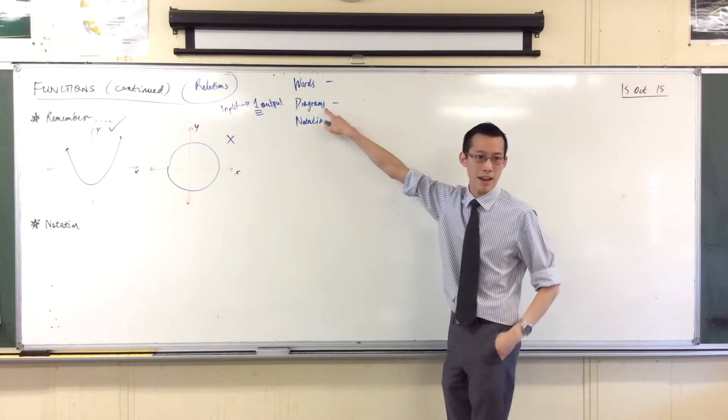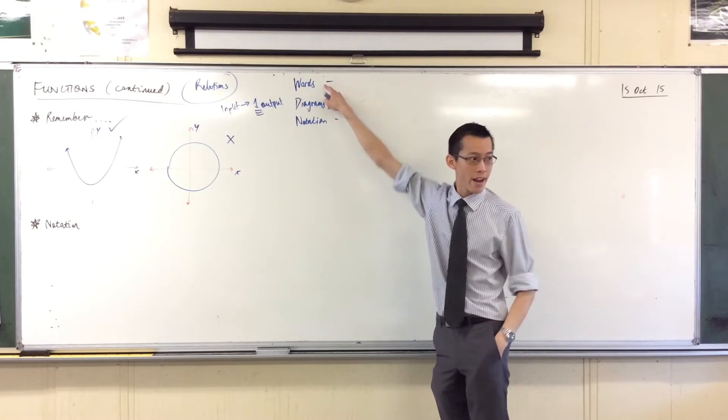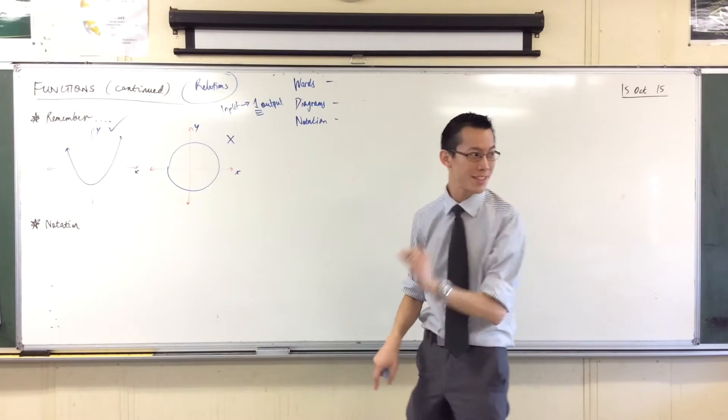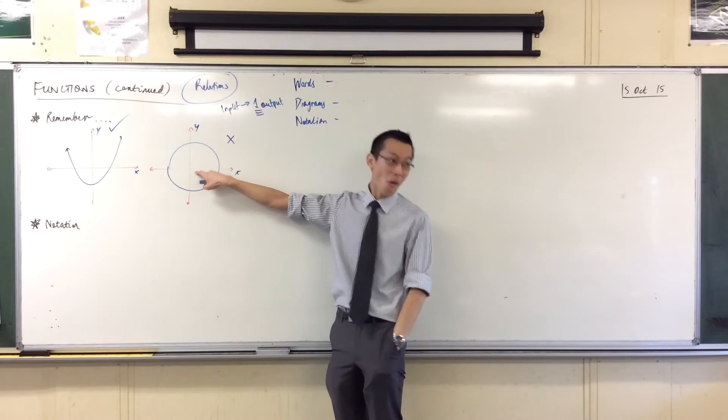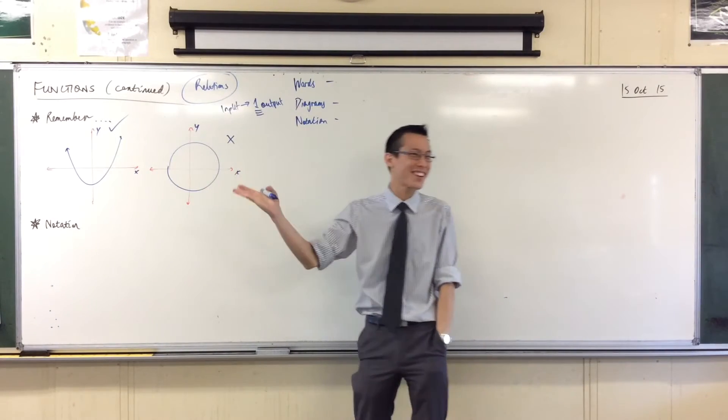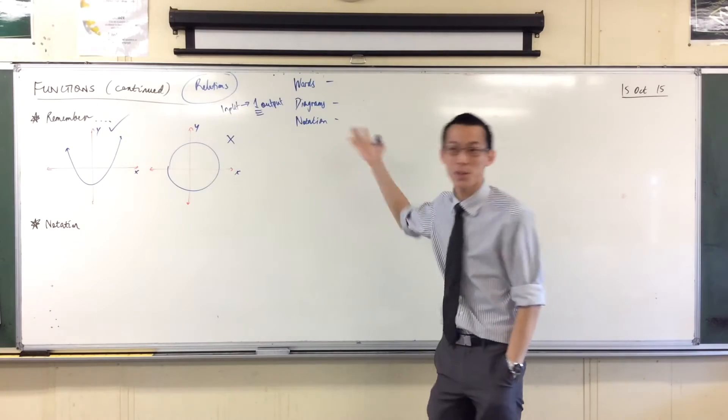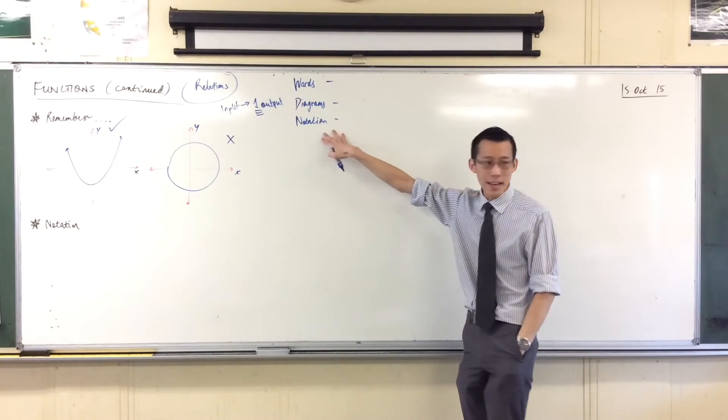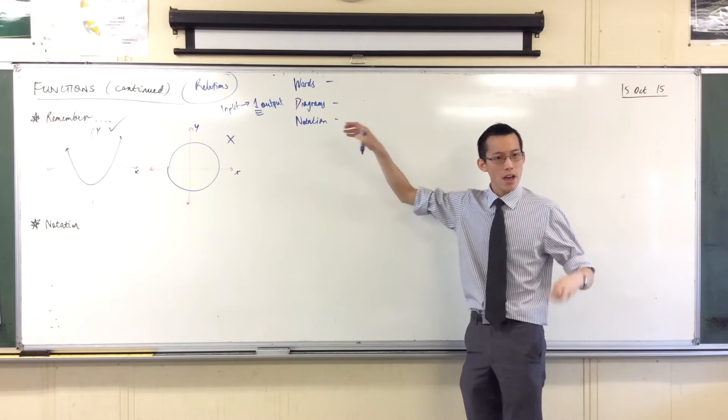Can you see how diagrams are kind of an extension of that? I could say the definition of a circle is it's the set of points that are equidistant from one central location. Or, I could draw a circle. And you'd say, oh, of course that's what you mean, rather than have to unpack all of those words. And then lastly, notation. If you remember, you might have done earlier in the year a topic where you had symbols like this.